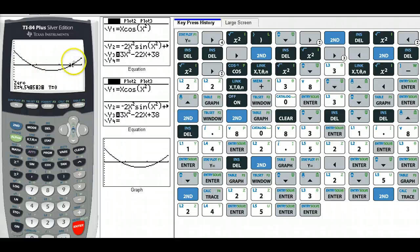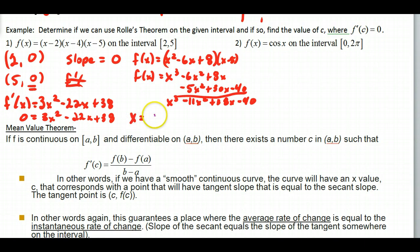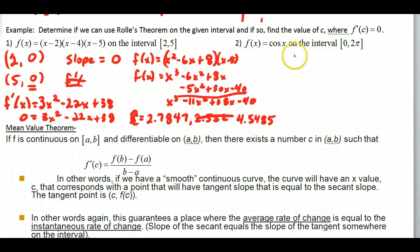There are two zeros: x = 2.7847 and x = 4.5485. So there are two C values — I'm guaranteed at least one, but in this case I ended up with two. You can go ahead and try the next one, then I'll show the result.